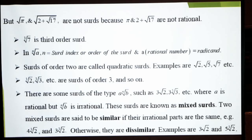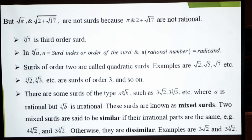Surds of order two are called quadratic surds — اگر آپ کے پاس second order والے surds ہیں تو ان کو quadratic surds کہتے ہیں۔ جیسے √2، √5، √7 — جب index دیا نہ ہو تو وہ 2 ہوتا ہے کیونکہ √2 = 2^(1/2)۔ تو ان سب کا order 2 ہے۔ اس کے بعد cube root of 2، cube root of 3 — ان کا order 3 ہے اور fourth root of 2 کا order 4 ہوگا، and so on۔